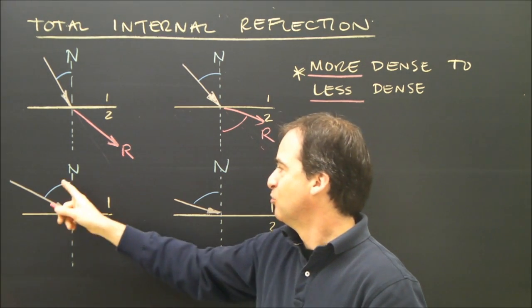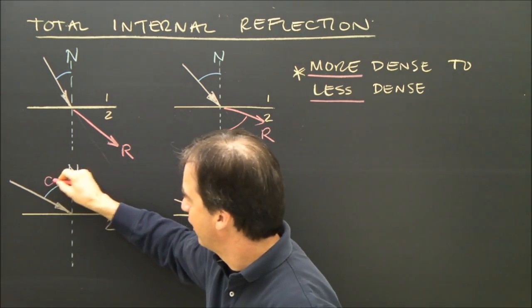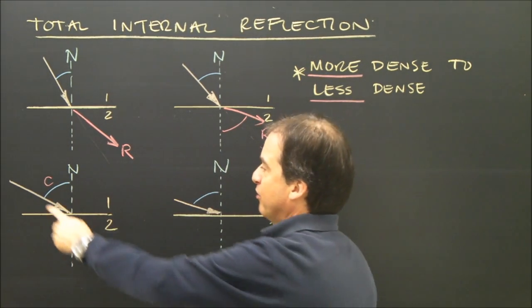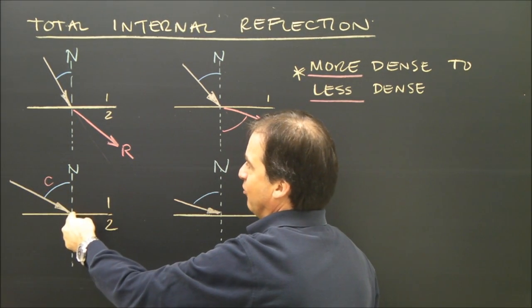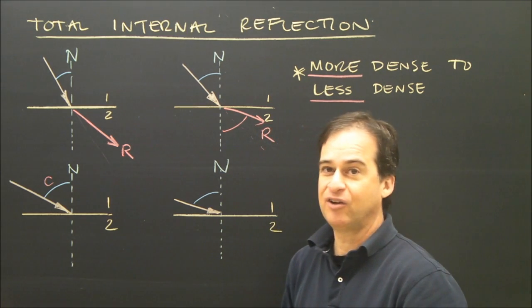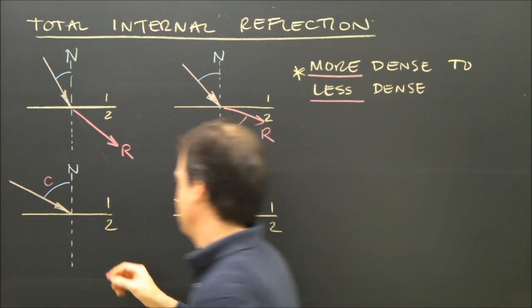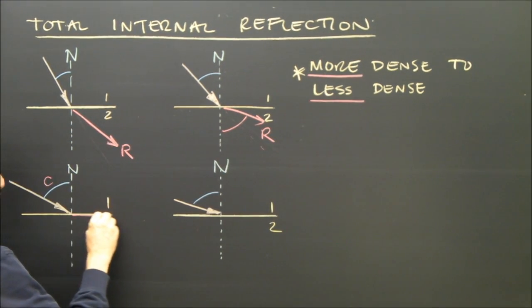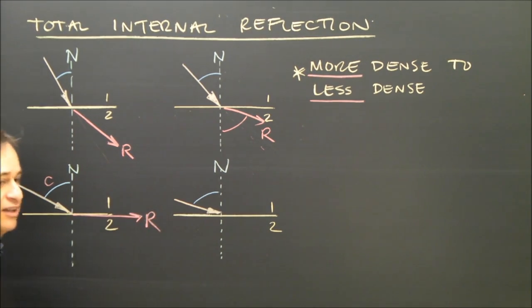So I get to the point where we call this the critical angle, C, where the light shines in at such a great angle, the angle of refraction I calculate is 90 degrees, meaning the light ray basically goes along the surface like that.